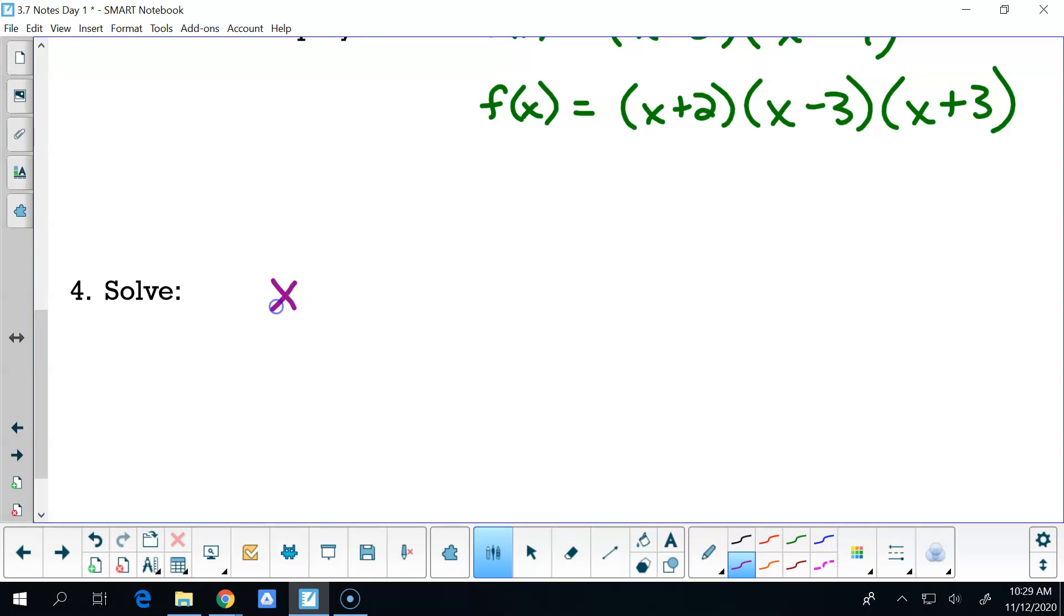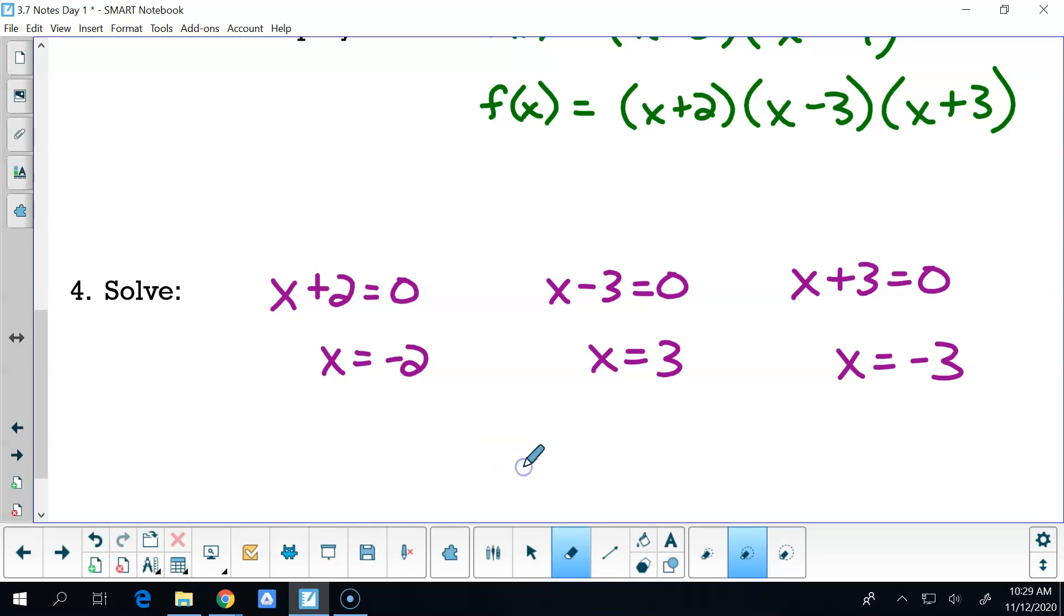now what we're going to do is we're going to solve that. So we would have x + 2 = 0, that gives me x = -2. That's the one that we found first. x - 3 = 0 gives me x = 3. x + 3 = 0 gives me x = -3. So in the end, I've got my three solutions. In the end, I have my three solutions: negative 2 and plus or minus 3.